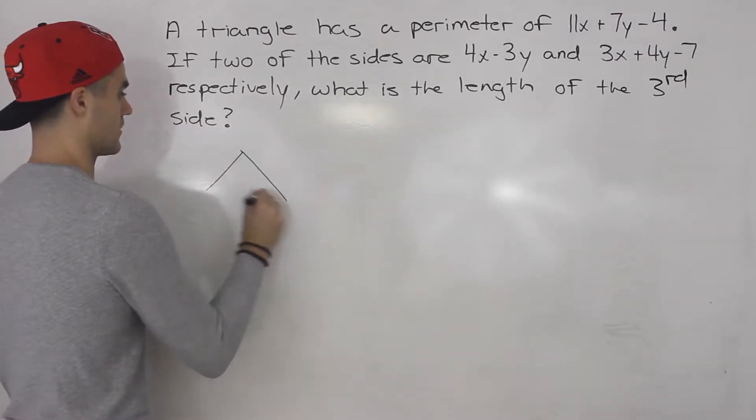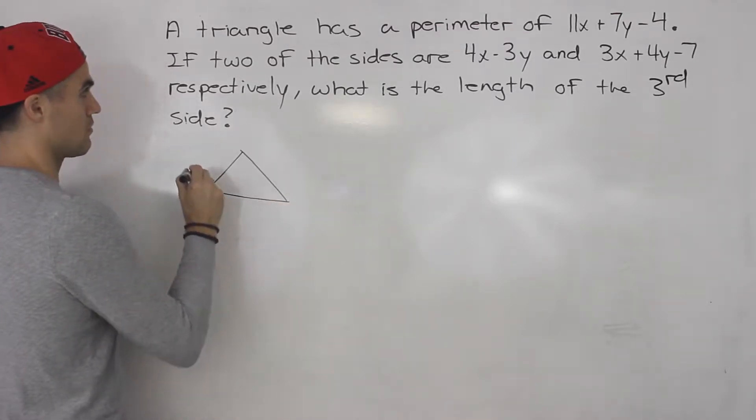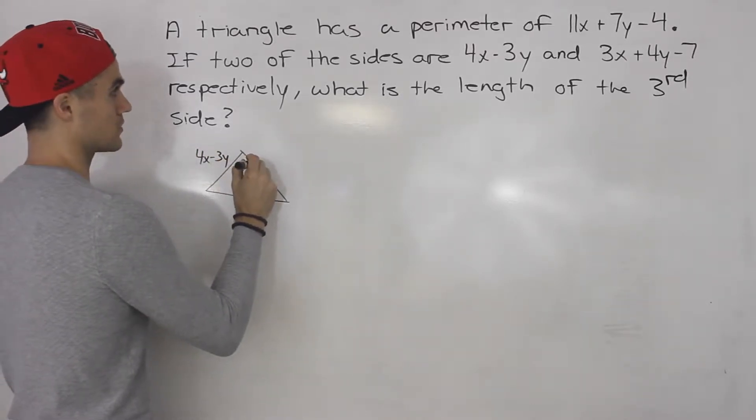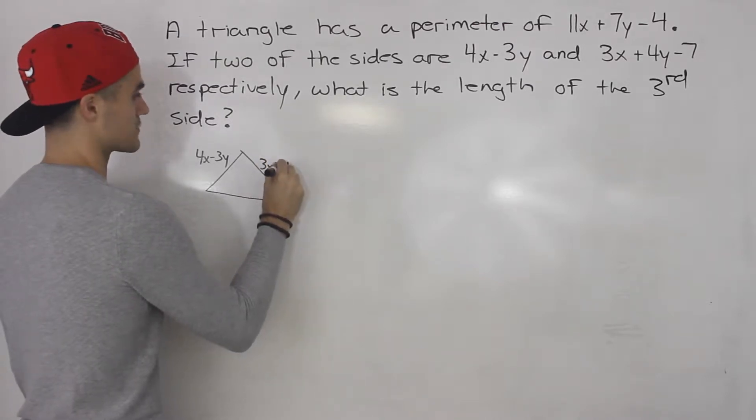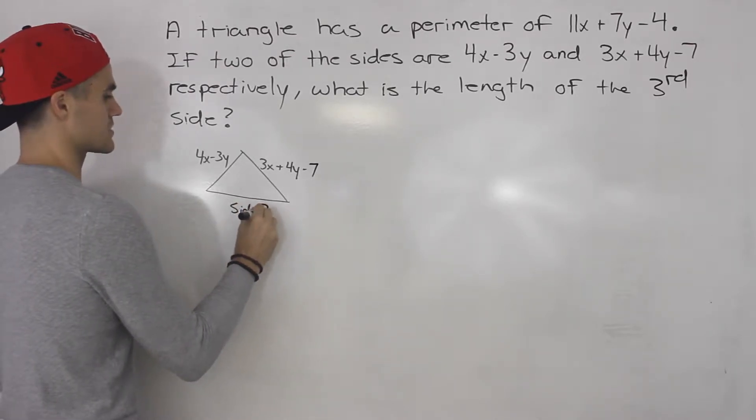So we're given this triangle here, and we're told that one of the sides has a length of 4x minus 3y. Then we're told another side has length 3x plus 4y minus 7 and we have to find this third side. Let's call it side 3.